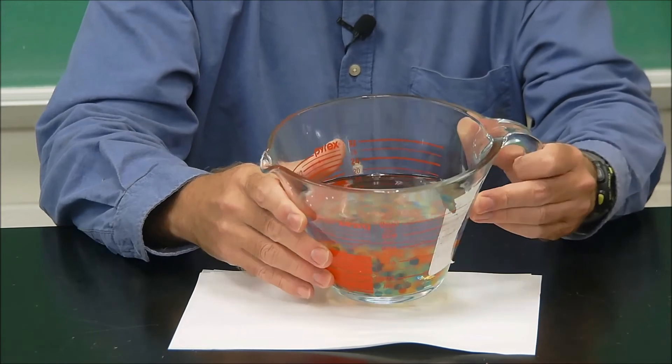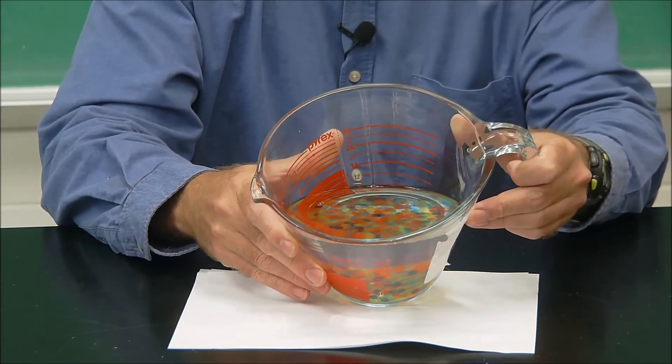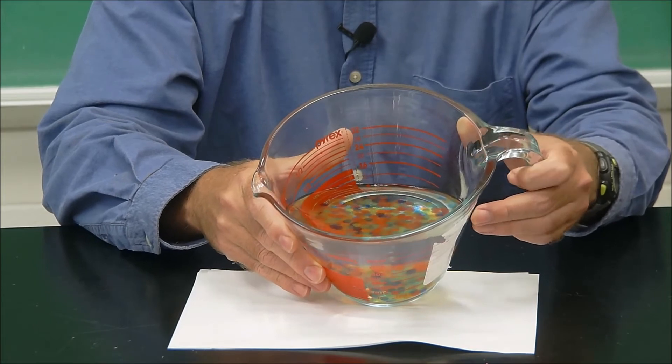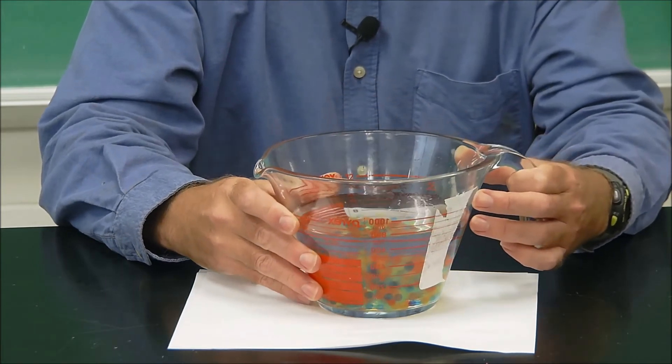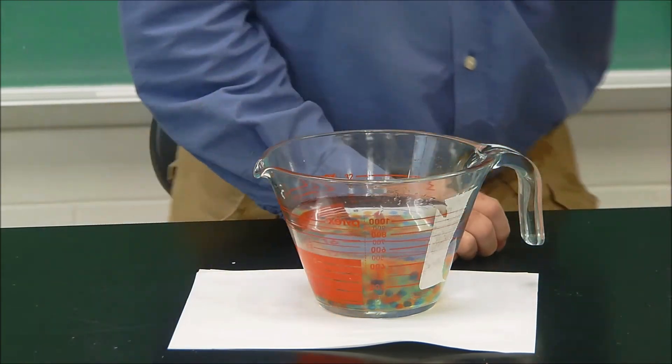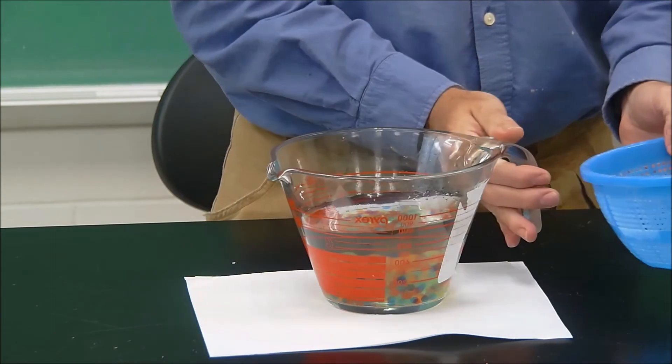So now there's a lot more water in the container because what's happened is the salt has drawn out some of that water through the process of osmosis. So what we're going to do now is pour out the excess salt water and then once again measure the actual volume of water beads that remains.